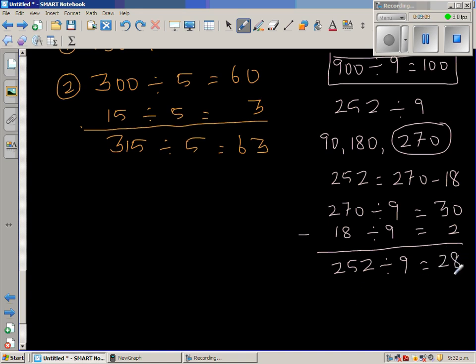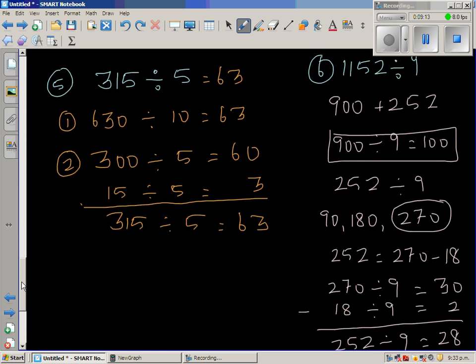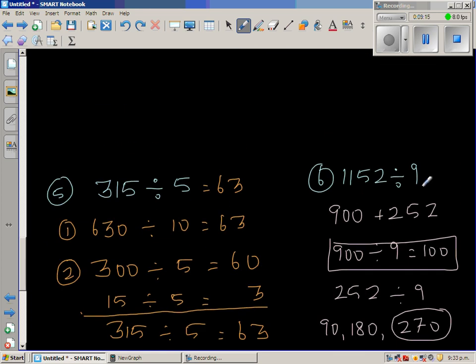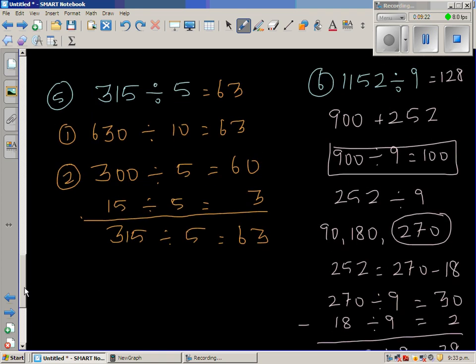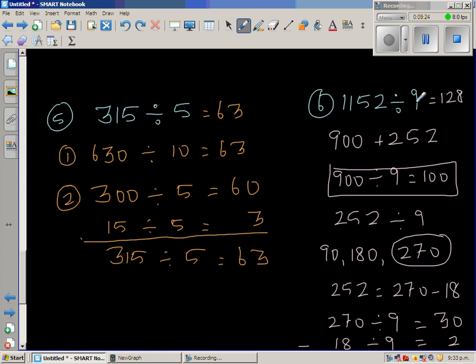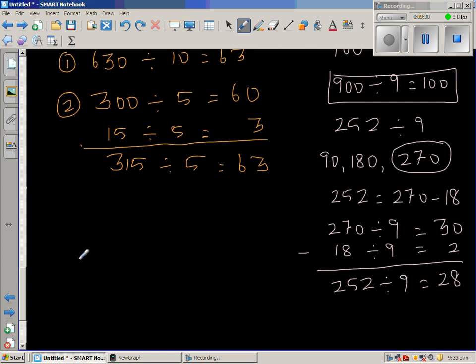So here you're taking away, so you have to be careful here. So 252 divided by 9 would be 28. So this is 28 and you've got 100. So the answer is 128. I want to check whether this answer is right. So let us check. If my answer is right, 128 times 9 should give me 1152.